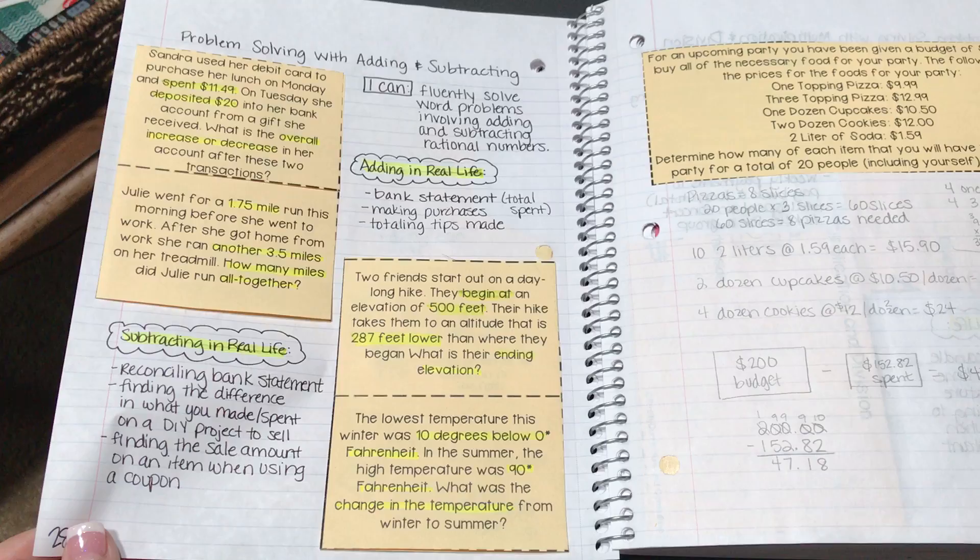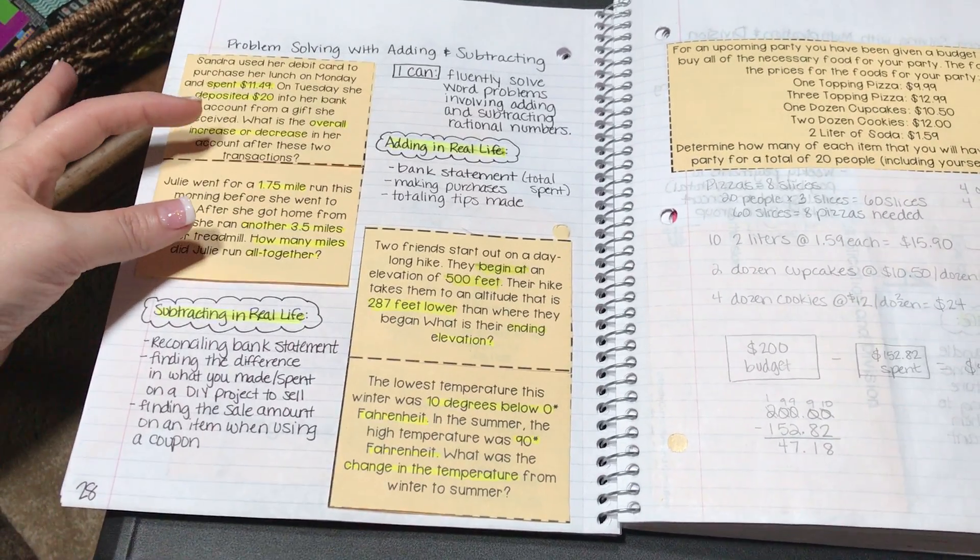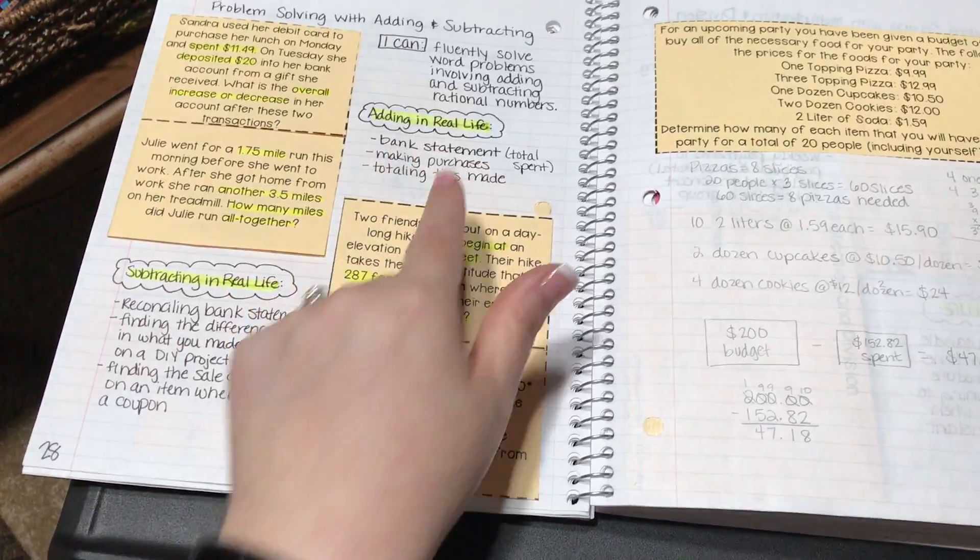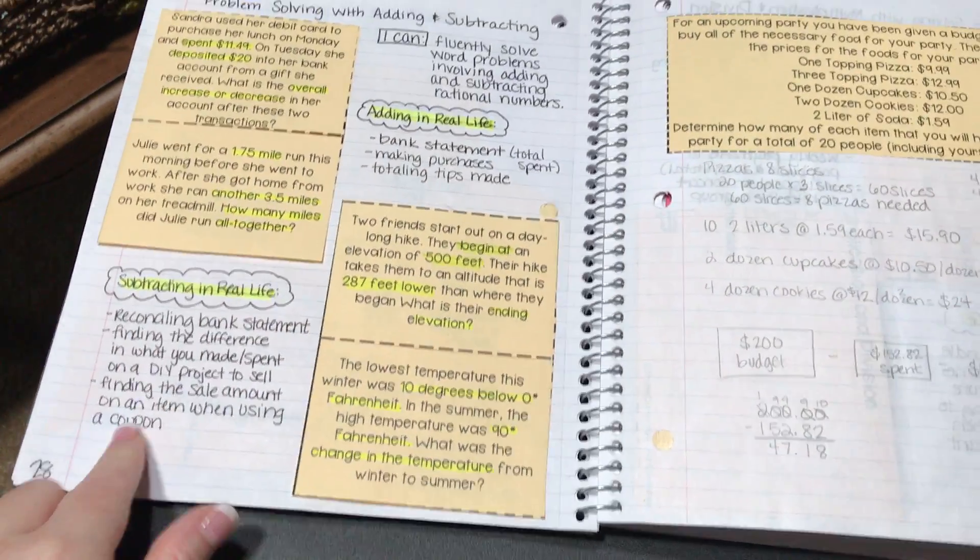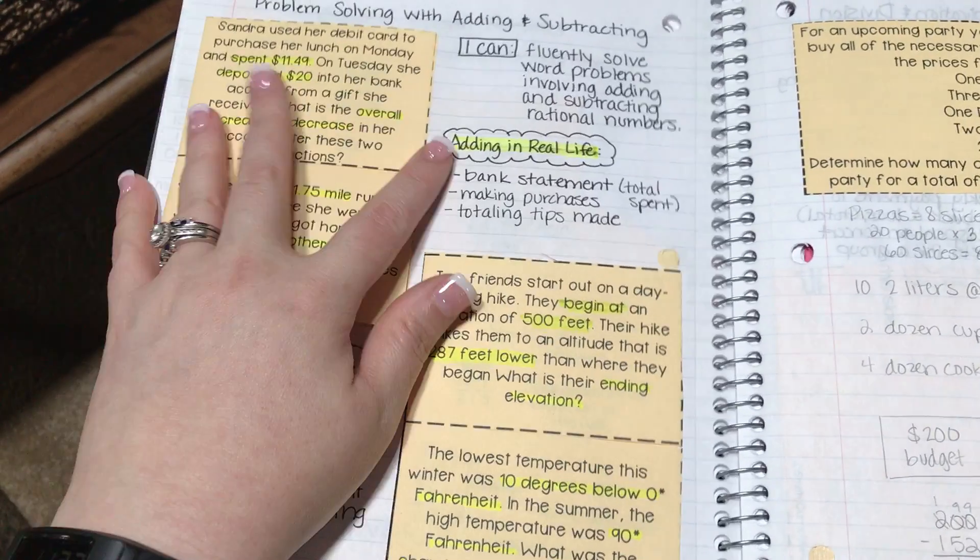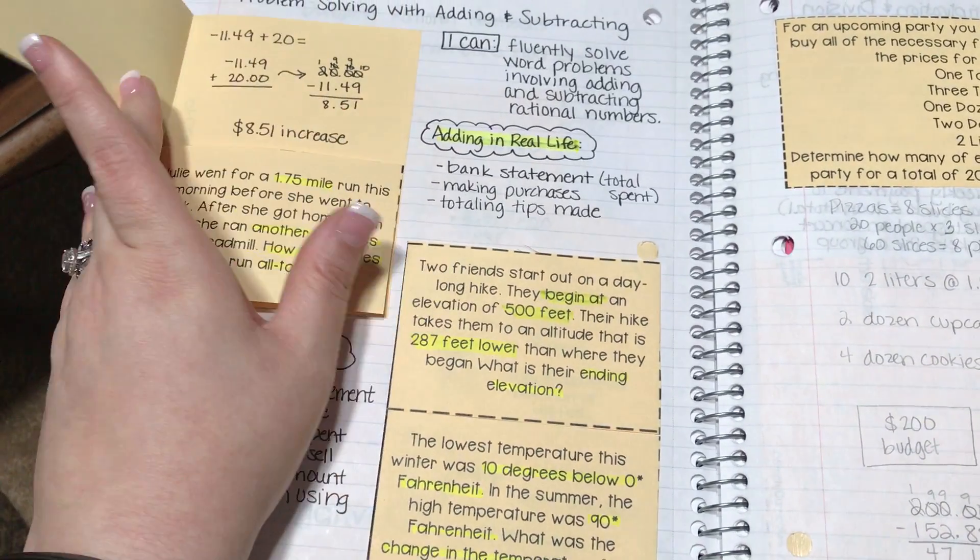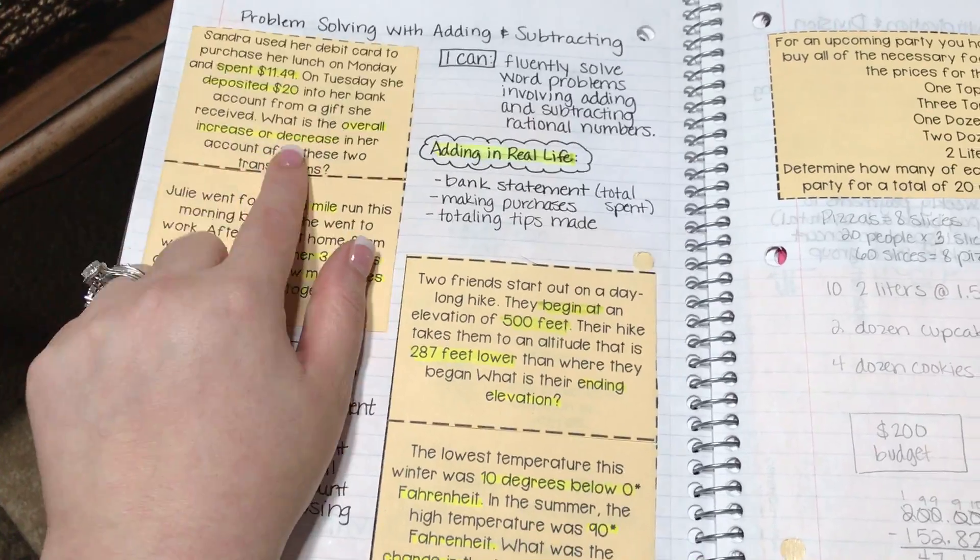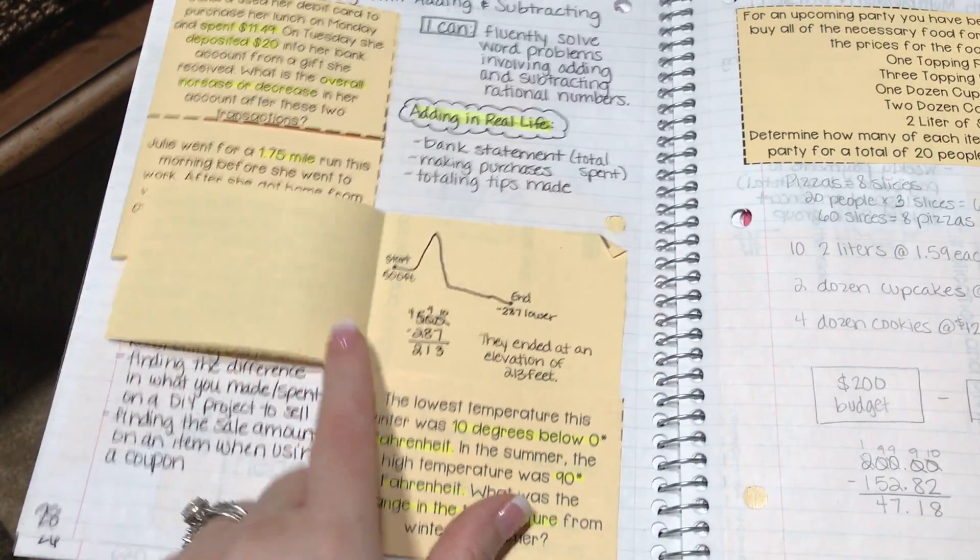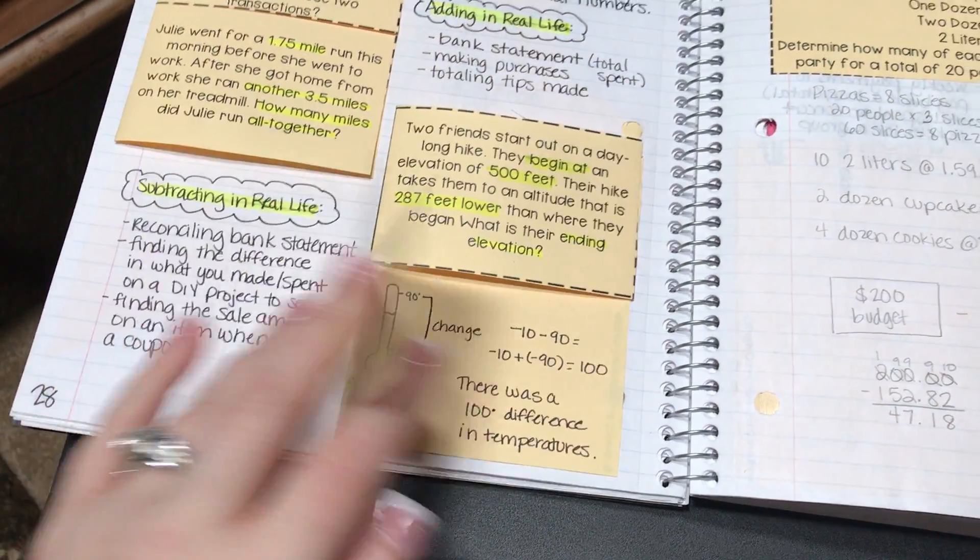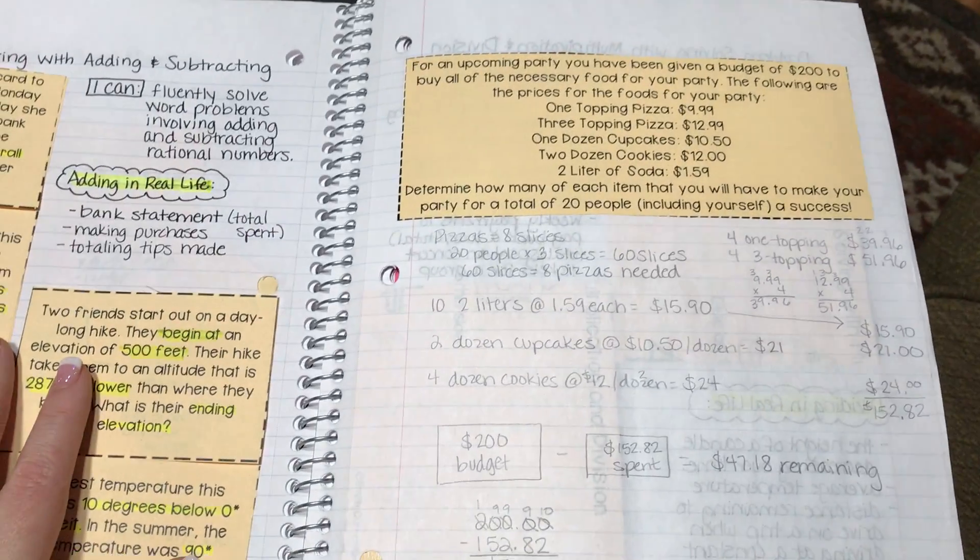The next thing that comes up is problem solving with adding and subtracting. These two problems deal with adding, these two problems deal with subtracting. We talked about when you add in real life and when you subtract in real life. Underneath each problem they are completely solved. You can see these are using the technical reading strategies that they have prior learned, so that's reinforcing those strategies.